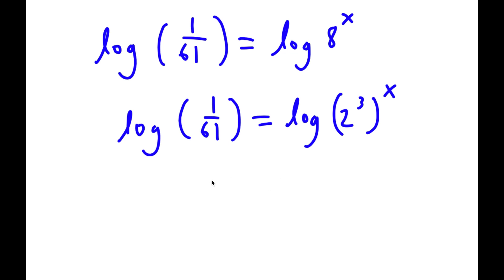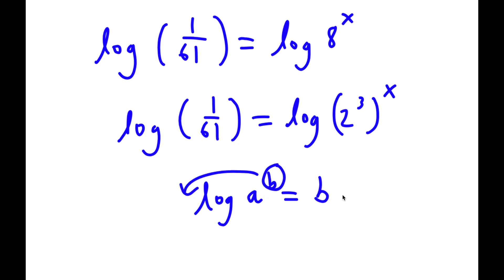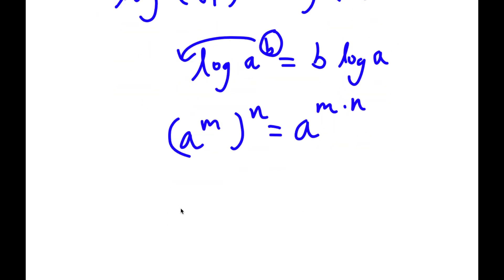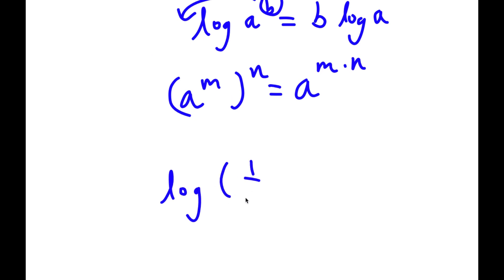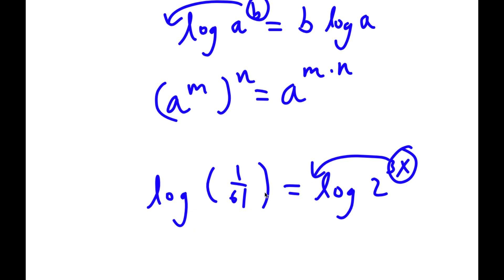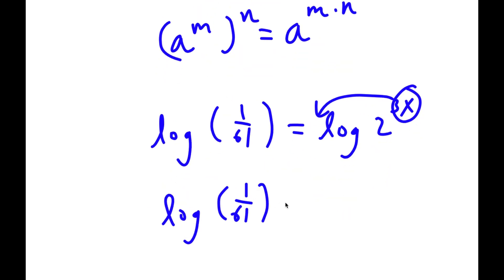If I have something in the form log a to the power of b, I can simply move the exponent b to the front, so this equals b times log a. And 2 to the power of 3 to the power of x — if I have something in the form a to the power of m to the power of n, it's the same as a to the power of m times n. So 2 to the power of 3 to the power of x equals 2 to the power of 3x. I can move 3x to the front, giving log of 1 over 61 equals 3x times log 2.